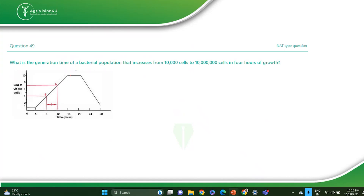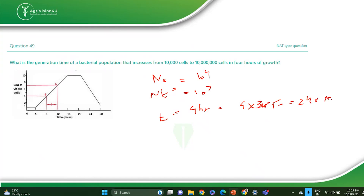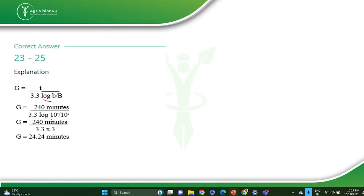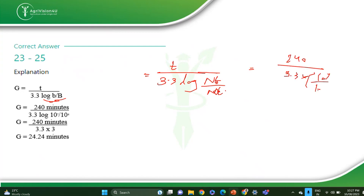The next question: what is the generation time of a bacterial population that increases from 10^4 cells to 10^7 cells in 4 hours? Write down: N0 = 10^4, Nt = 10^7, time = 4 hours = 240 minutes. Find generation time G using the formula G = T / (3.3 × log(Nt / N0)). Put all the values and you get the answer: 48.4 minutes.